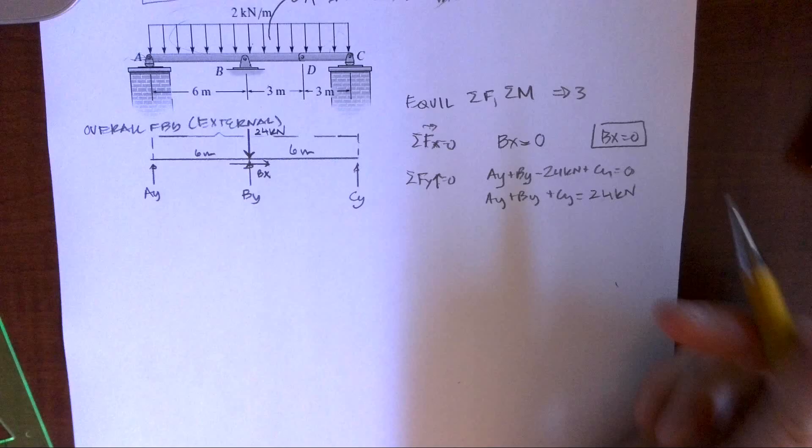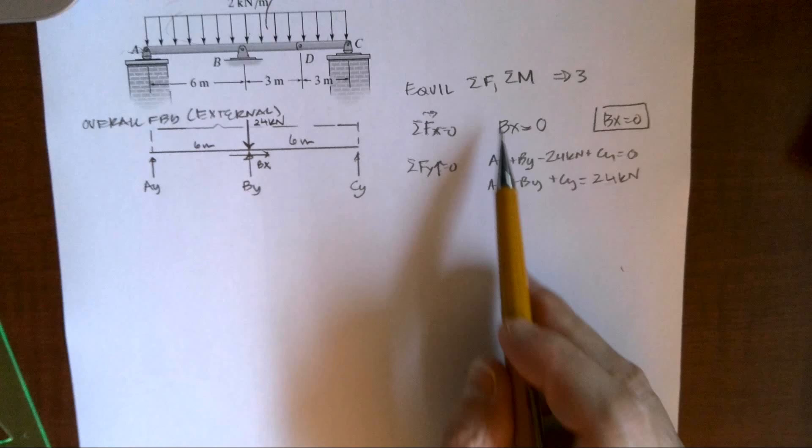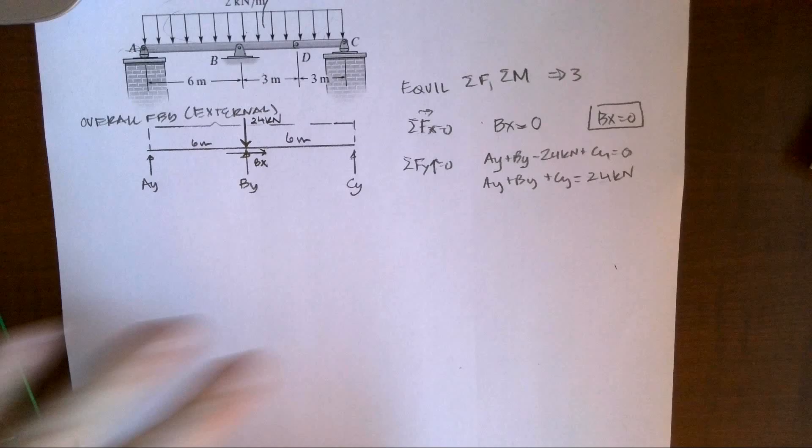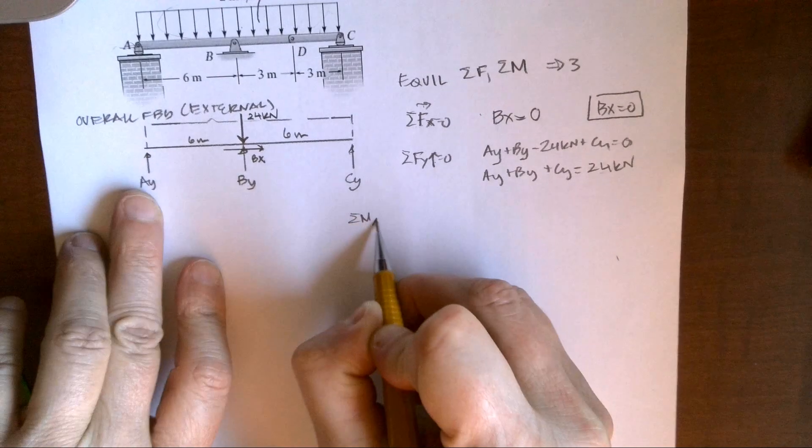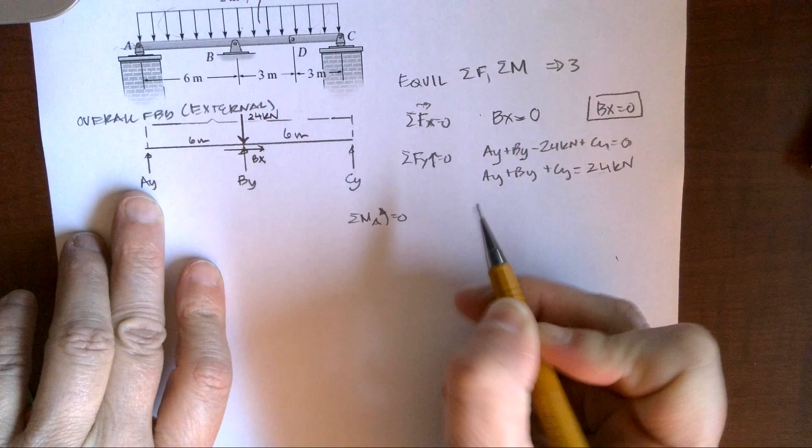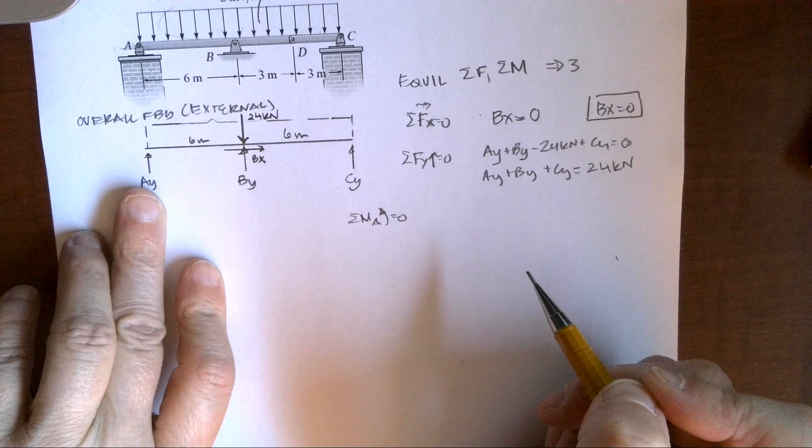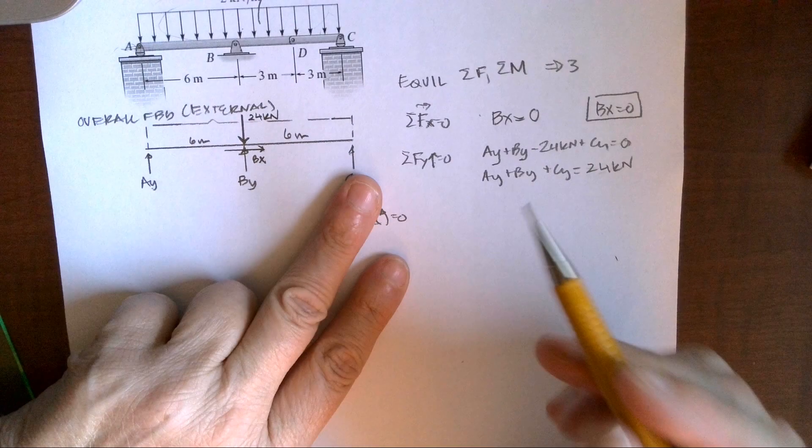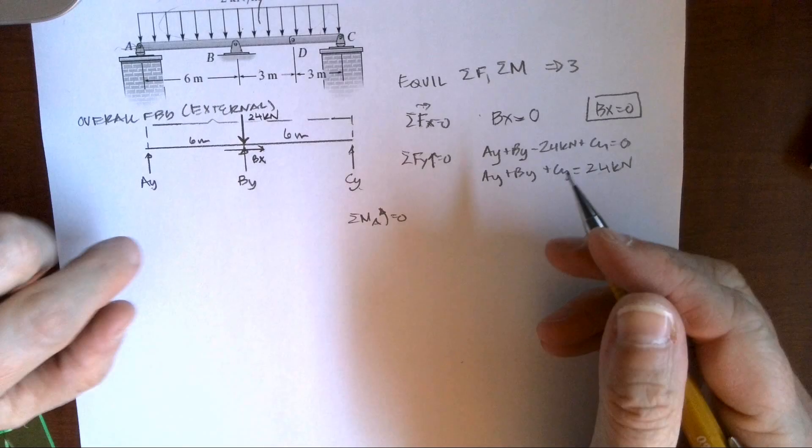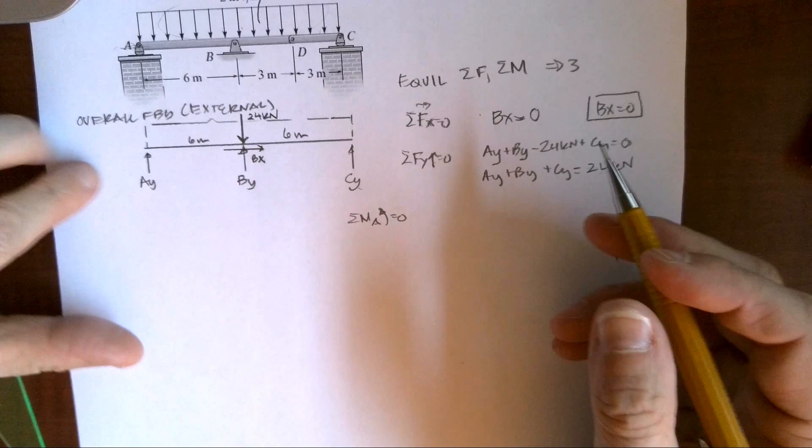So I have three unknowns there. This isn't going well. I've already used two equations. I only have one equation left. So I'm going to go ahead and write moments. And I'm going to sum those about, I'm going to just pick point A. It doesn't matter. If I did B, I'd still have A and C unknown. If I did C, I'd have A and B unknown. But we're just going to go ahead and set up our three equations that we would normally use. So I'm going to put my finger on A.